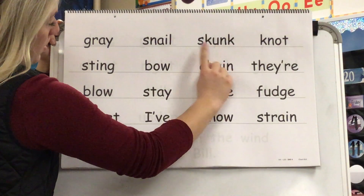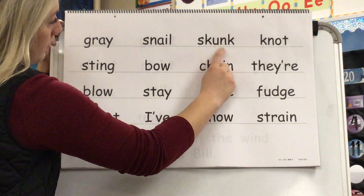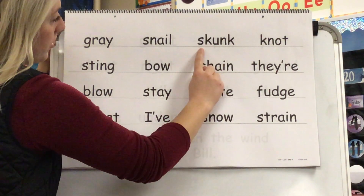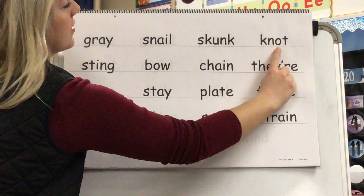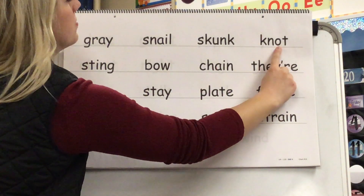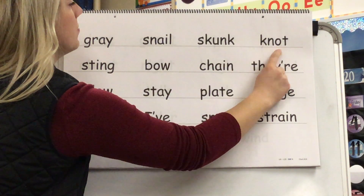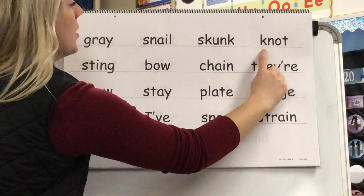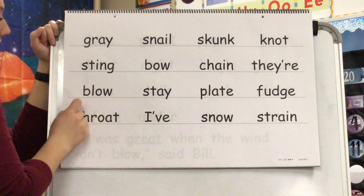Sound? A. Blend? Skunk. Word? Skunk. Yes, skunk. Sound? A. Blend? N-n-o-t. Word? Not. Yes, not.